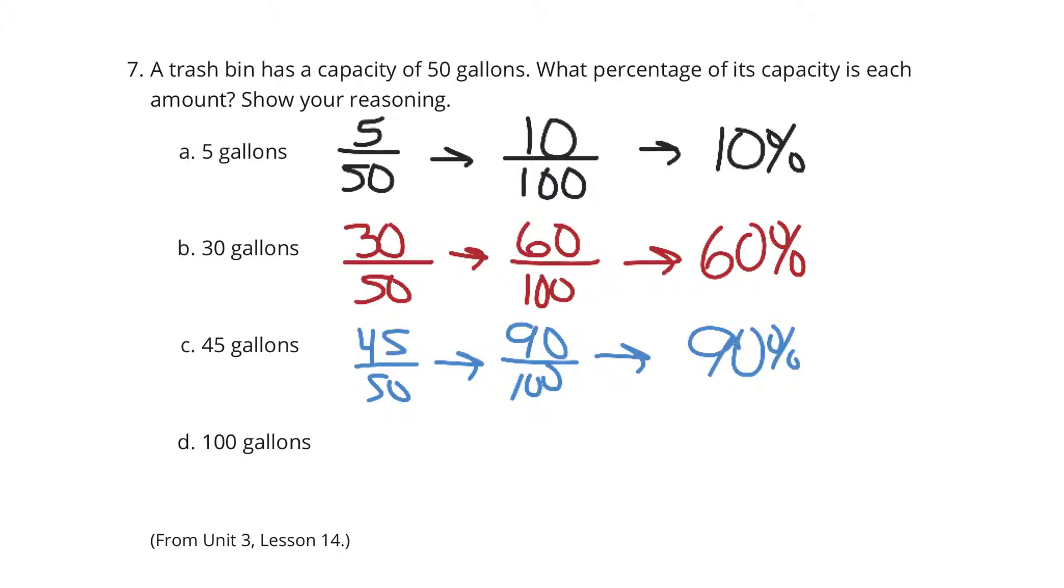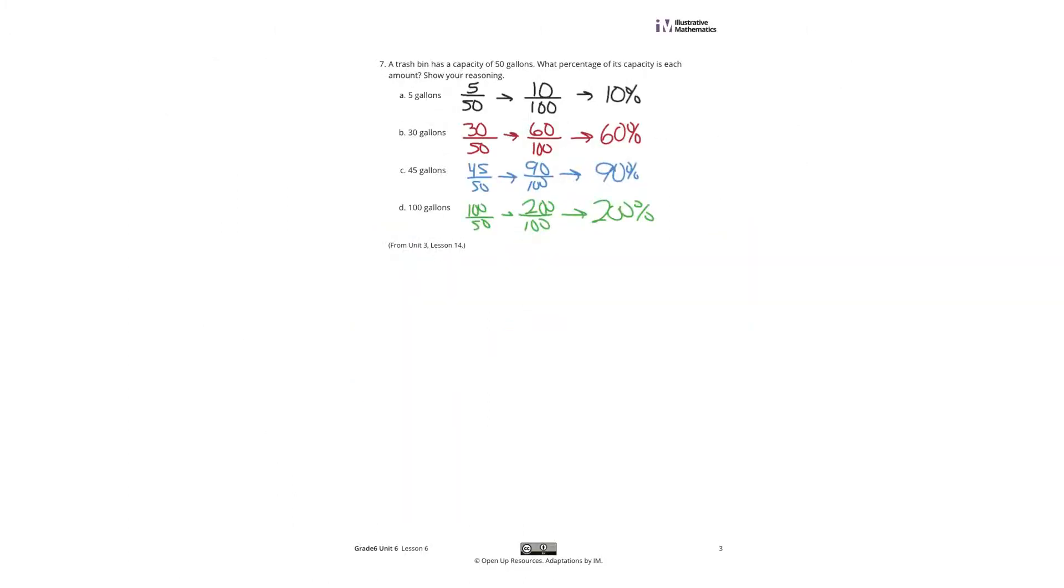Now the interesting one, 100 out of 50. Still multiply by 2 on top and bottom, you get 200 over 100, which is 200%. That's it for this grade 6 practice problems review. Good luck.